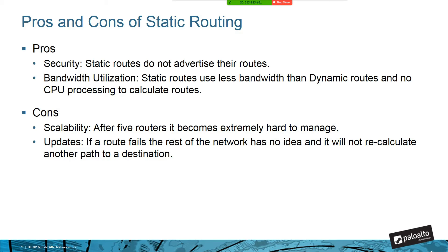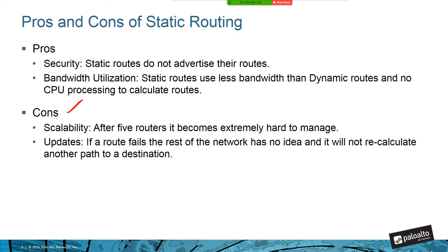Another advantage is bandwidth utilization and CPU savings — since there are no trigger updates and no topology calculations, you save some processing power. Nowadays memory and CPU are inexpensive so it's not a major factor. The main disadvantage is scalability — beyond about 10 routers it becomes a big issue — and the lack of trigger updates means you won't know when a route two hops away has changed, and you keep sending packets in the wrong direction.